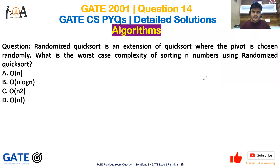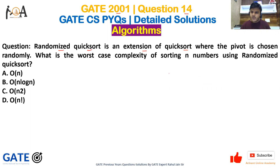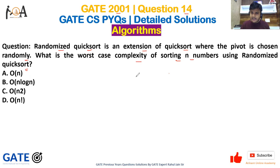Welcome to Rehant Online Academy. In this session we are going to discuss a very important question of GATE CS 2001, question number 14 from algorithms. The question is: randomized quicksort is an extension of quicksort where the pivot is chosen randomly. What is the worst case complexity of sorting n numbers using randomized quicksort?